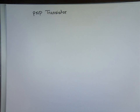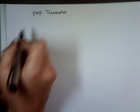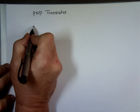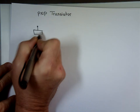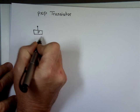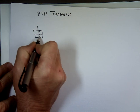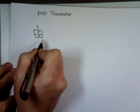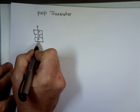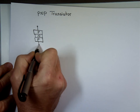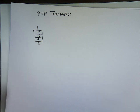What's a PNP transistor? Why are they called PNP? It's because you have a positive junction here, a negative junction here, and a positive junction here. So: positive, negative, positive.